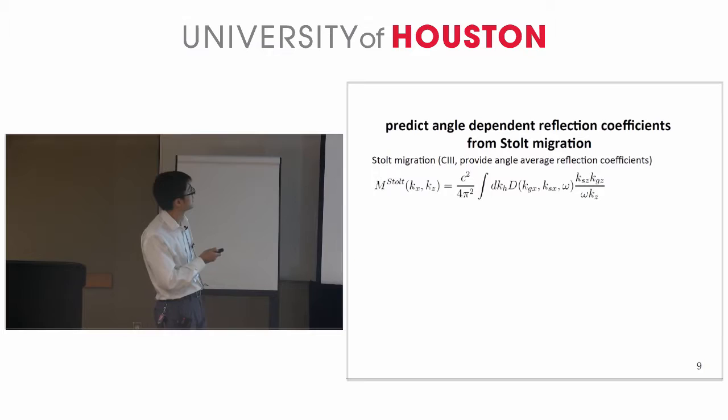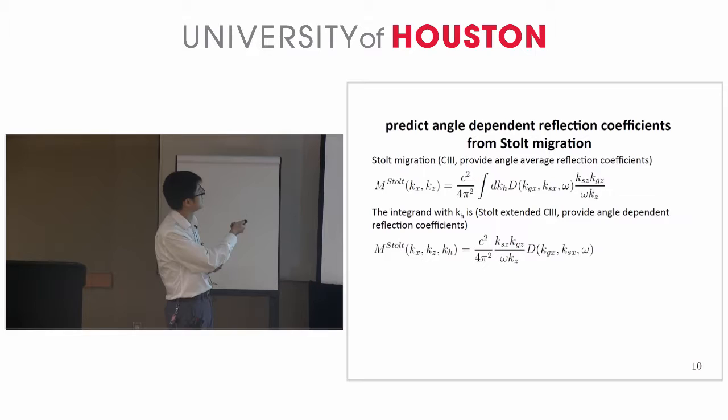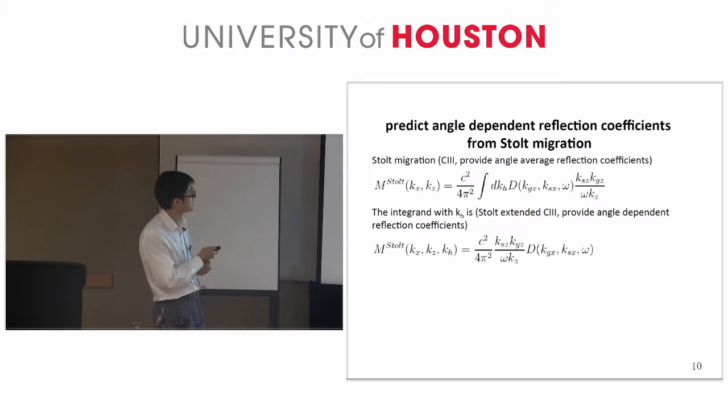Now we have the STOE migration in KX, KZ domain. The second equation and the image can provide an angle-average reflection coefficient. The next second equation is an integrand in the first equation, which has a variable KH, which is a Fourier conjugate of a subsurface offset. This is an extended STOE image, and it can provide an angle-dependent reflection coefficient.